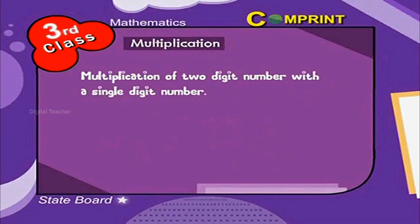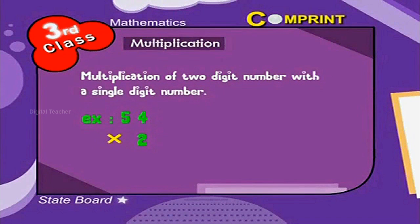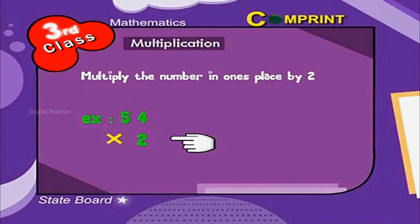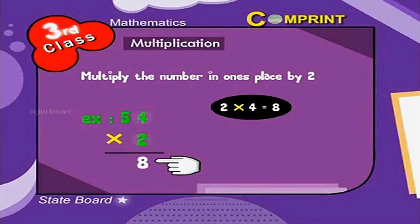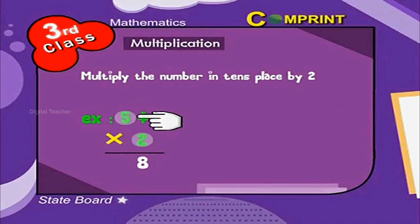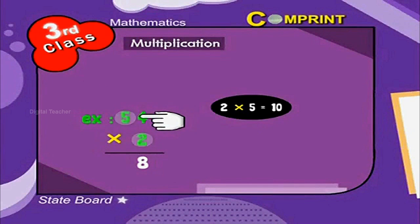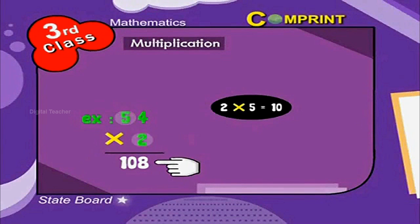Multiplication of a 2-digit number with a single digit number. 54 into 2. Step 1: multiply the number in the 1's place by 2. 2 into 4 is equal to 8. Write down the answer below the 1's digit, that is 8. Step 2: multiply the number in the 10's place by 2. 2 into 5 is equal to 10. Thus, the answer is 108.